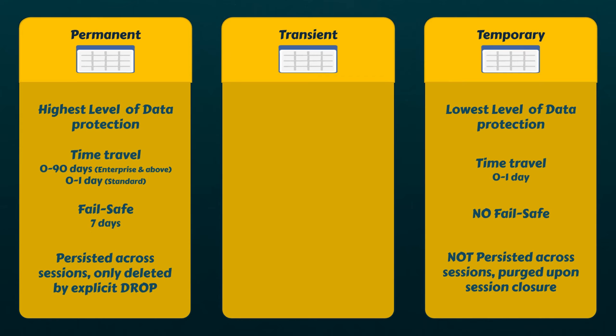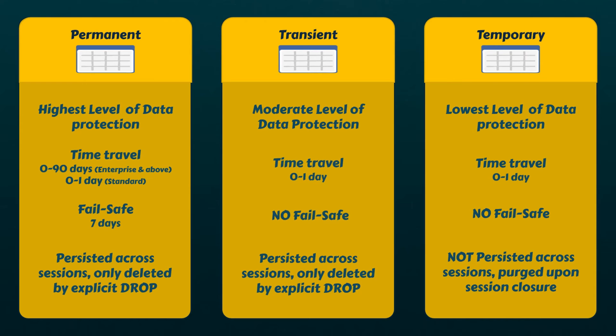And that brings us to our third type of table, which is the transient table. Transient tables persist until explicitly dropped, and are available to all sessions and users with the appropriate privileges. Transient tables are similar to permanent tables with a few key differences: they do not have a failsafe period, and time travel is limited to just one day. Therefore, transient tables are specifically designed for transitory data that needs to be maintained beyond each session, but do not require the same level of data protection and recovery provided by permanent tables.